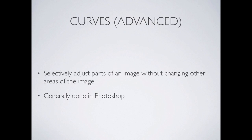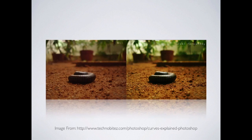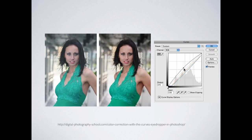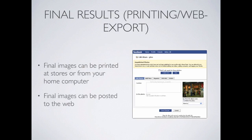Curves adjustments allow you to selectively adjust certain tonal ranges of an image without changing others. It's virtually impossible to describe verbally — you have to do it. It takes the first image and makes it look like the second image in the example. You can see the transition between before and after, and it's a significant adjustment. We'll do it live and it'll make more sense.